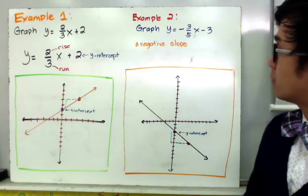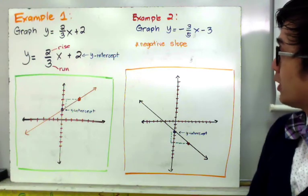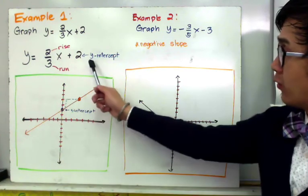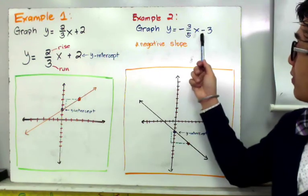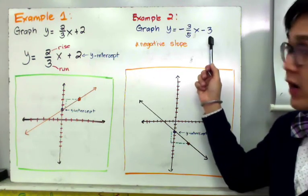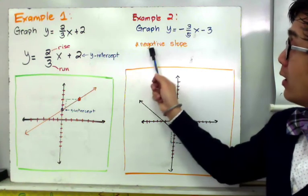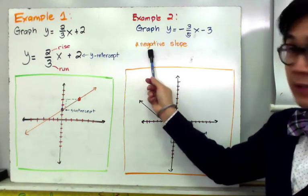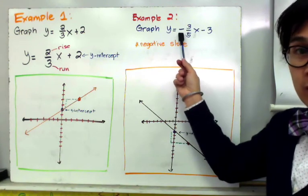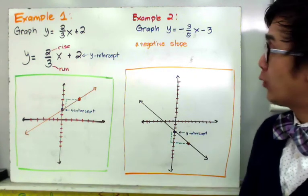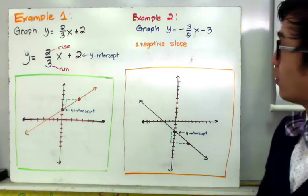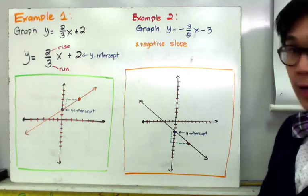For example number 2, we're going to graph y = (-3/5)x - 3. Just like in example 1, we'll plot the first point at the y-intercept, which is negative 3, and use the slope to find the second point. Make sure to notice that this is a negative slope, which means the linear equation is going downward. Let's see how we plot the points needed to graph this equation.